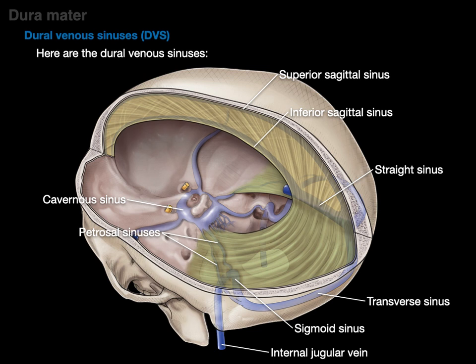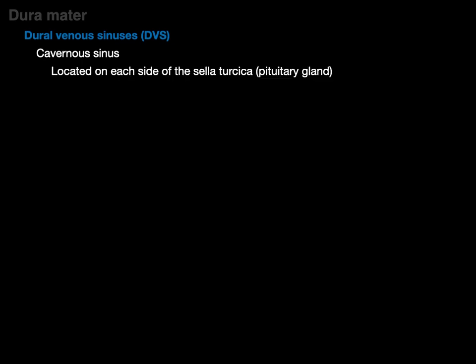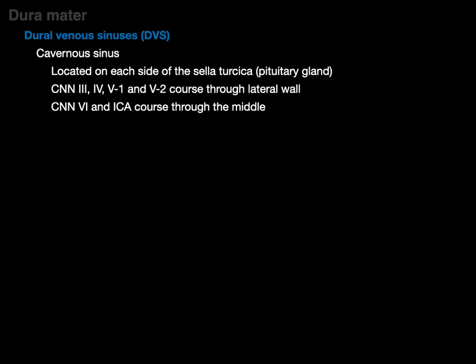All these dural venous sinuses ultimately drain into the internal jugular vein. Now, the cavernous sinus is located on each side of the sella turcica, the pituitary gland. Cranial nerves 3, 4, V1, and V2 course through the lateral wall, and cranial nerve 6 and the internal carotid artery course through the middle.